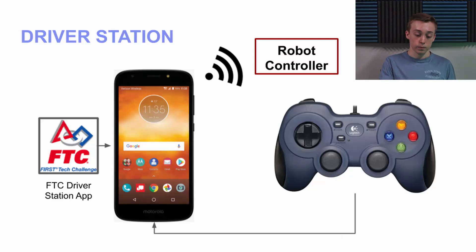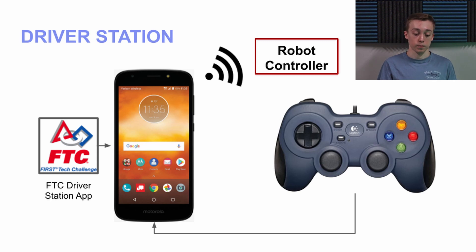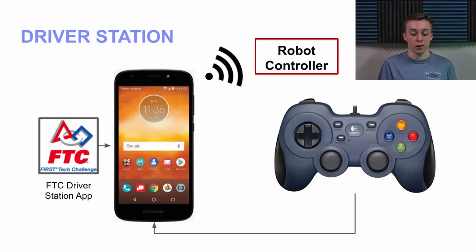Here's the driver station. The FTC driver station app from the Play Store is installed onto your driver station phone — you have to use an Android phone for the driver station as of right now. You can plug in one or two gamepads; one option is the Logitech gamepad, and you can also use an Xbox 360 controller. That's plugged into the driver station running the driver station app, and it communicates wirelessly through a technology called Wi-Fi Direct with the robot controller.